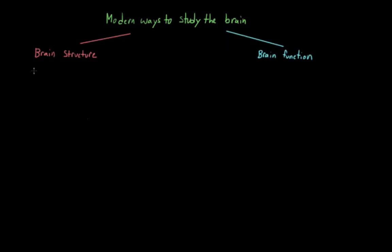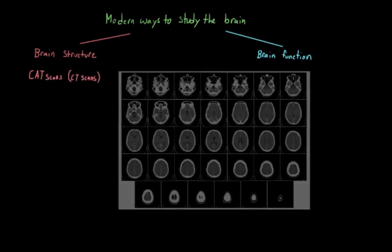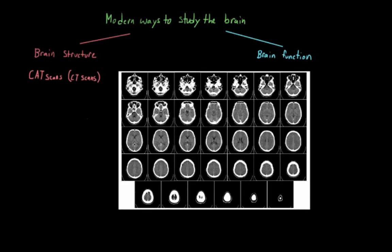On the structural side, we'll start with CAT scans or CT scans, which stands for computerized axial tomography. This method uses x-rays in order to create an image of the brain. This is super useful in that it can show us whether or not someone has a tumor or if there's abnormal swelling or bleeding, but it can't tell us anything about what areas of the brain are active at a given time.